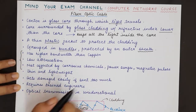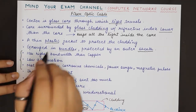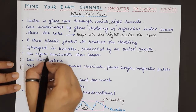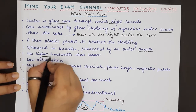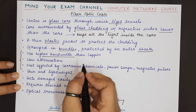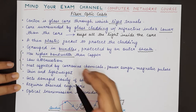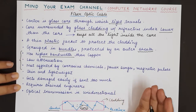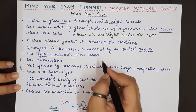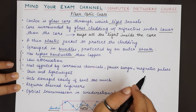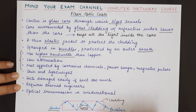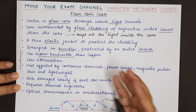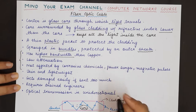Coming to the advantages, the first advantage of a fiber optic cable is that it has a higher bandwidth than copper. A larger amount of data can be transmitted as compared to any copper-based transmission media like twisted pair cable or a coaxial cable.